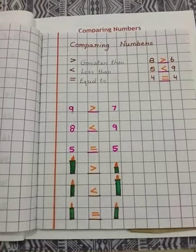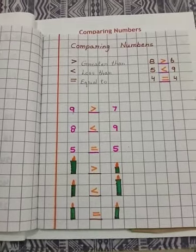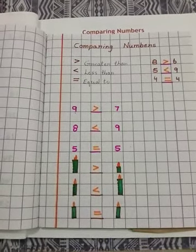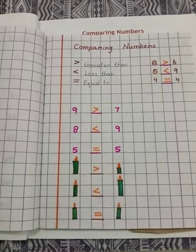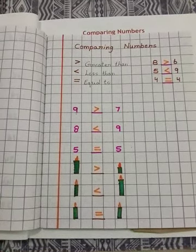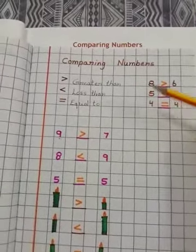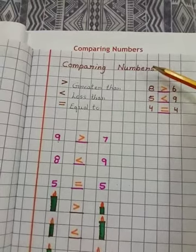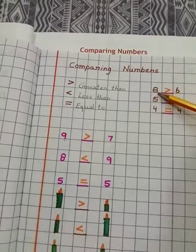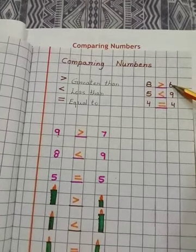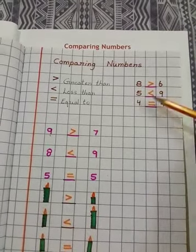In maths, to compare means to examine the difference between numbers, quantities, or values to decide if it is greater than, smaller than, or equal to another quantity. When we compare numbers, we see if between two numbers the first number is greater than, the first number is smaller than, or the numbers are equal.